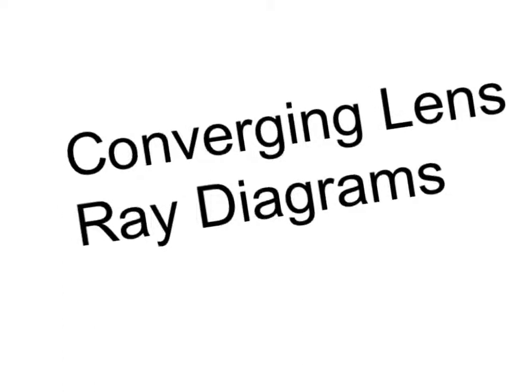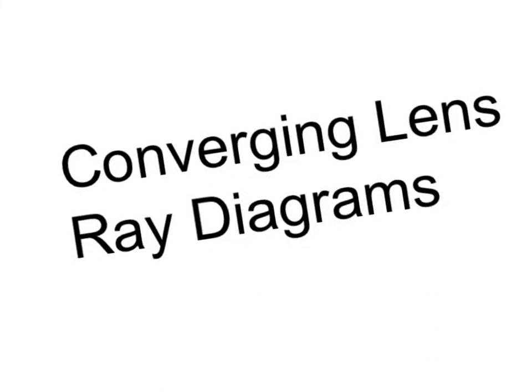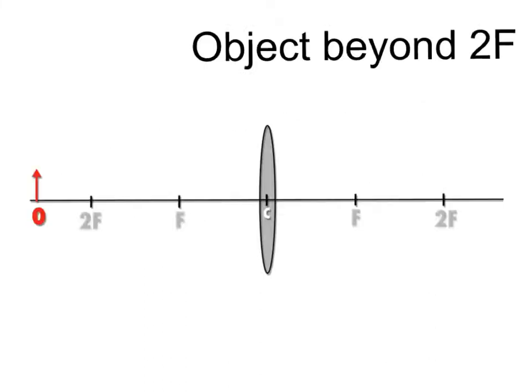So we're continuing our series on converging lens ray diagrams. And this time we want to look at what happens when we place our object further out than 2F. So our object is beyond 2F.